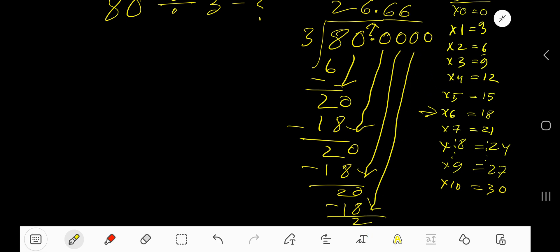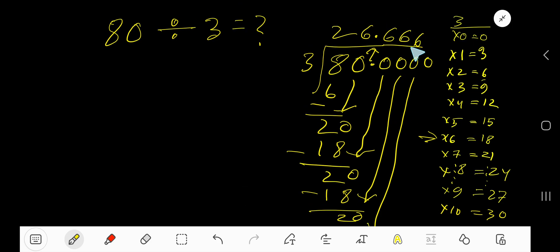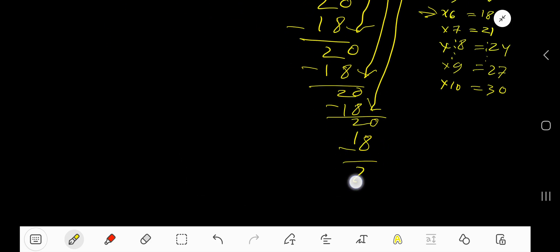Bring down another 0. 3 goes into 20. Again, 6 times. 6 times 3, 18. Subtract 2.